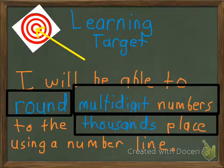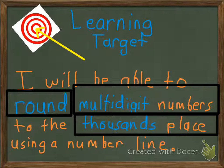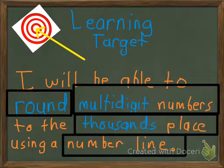We're going to round them to the nearest thousands place. So, we're going to round multi-digit numbers to the thousands place, and we are going to use a number line. Remember, that's what we're going to learn today.